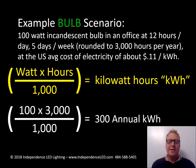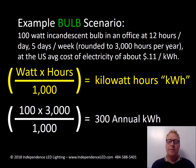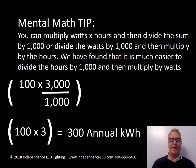At 12 hours a day, five days a week, rounded to three thousand hours a year. If we use the US average of 11 cents per kilowatt hour, we're talking about 100 watts times 3,000 divided by 1,000 equals 300 annual kilowatt hours. Now the mental math tip: you can multiply watts times hours and then divide the sum by a thousand.